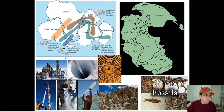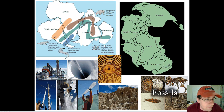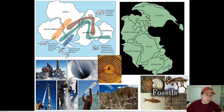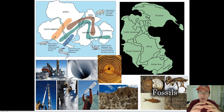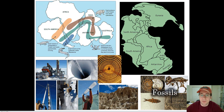Another piece of evidence is the shape of the continents themselves. When you look at a map, South America looks like it fits like a puzzle piece into Africa. North America looks like a puzzle piece with Europe. India seems to fit on the east coast of Africa, and Antarctica seems to fit with Australia. These puzzle piece shapes made it very clear to Wegener that the world used to be a supercontinent.